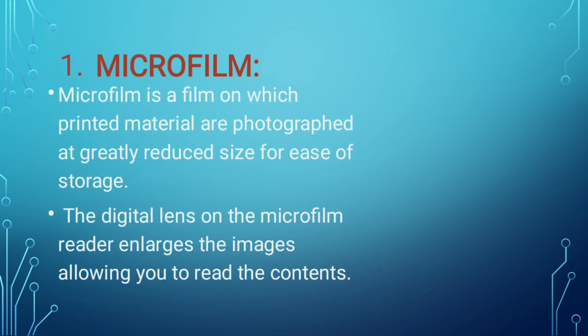The first topic I will explain is microfilm. Microfilm is a film on which printed materials are photographed at greatly reduced size for ease of storage. To see these reduced-size images, we use the digital lens on the microfilm reader, which enlarges the images allowing you to read the contents. The images on microfilms are so small they cannot be seen by the naked eye.